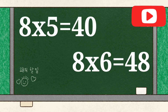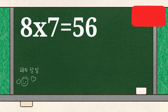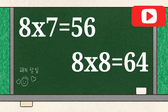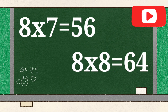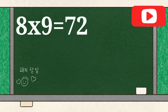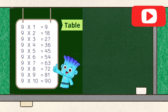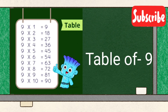8 6's are 48, 8 7's are 56, 8 8's are 64, 8 9's are 72, 8 10's are 80. Table of 9.